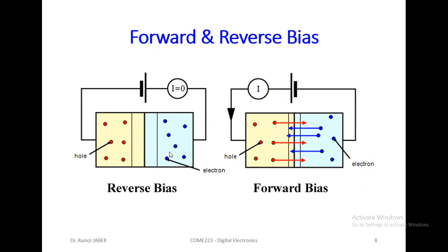In reverse bias: we put negative on the plus (P-type) and positive on the minus (N-type) — the polarity is reversed. In this case, the negative attracts the protons away from the junction and the positive attracts the electrons away, so the depletion region widens. No current flows — current is zero. This is called reverse bias.